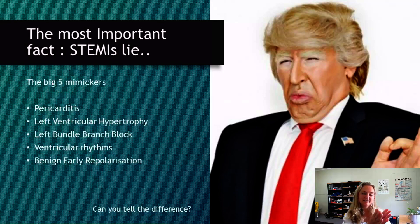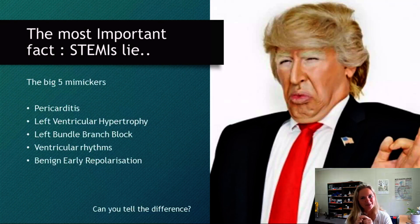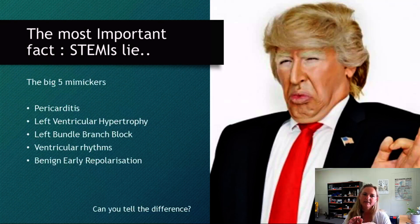Not everything that presents as a STEMI is actually a myocardial infarction, and our education needs to improve to recognize at least the big five mimickers of ST elevation: pericarditis, left ventricular hypertrophy, left bundle branch block, ventricular and pace rhythms, and benign early repolarization. Our curriculum when teaching about ST elevation needs to cover those changes as well. Can you tell the difference? If you can't, you shouldn't be calling a STEMI a STEMI.